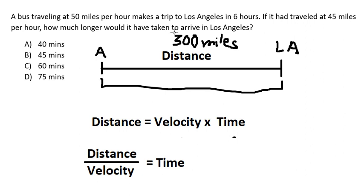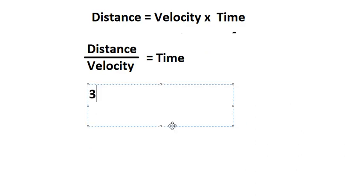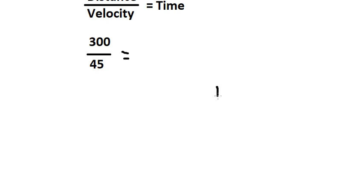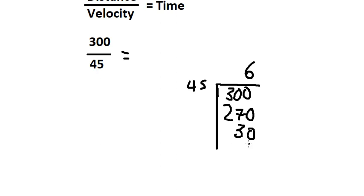We know that the distance does not change, so we have distance 300 and velocity 45. We need to do long division. We can multiply by 6, which gives us 270. Number 30 is smaller than 45, so we need to borrow another zero.